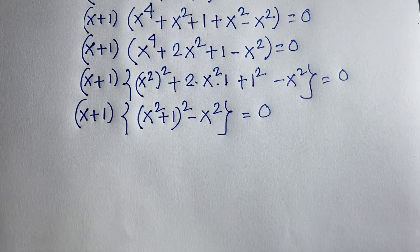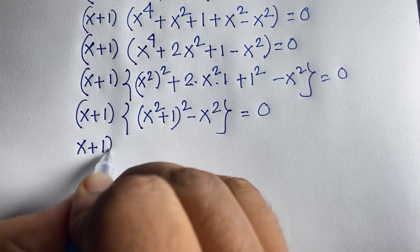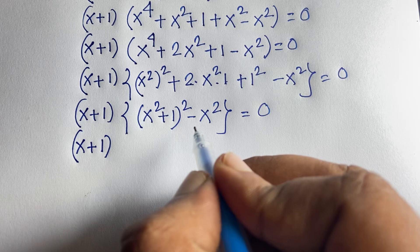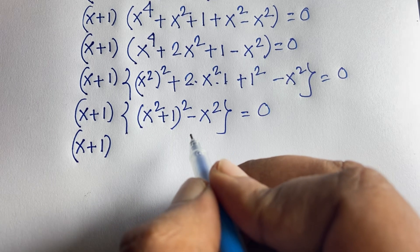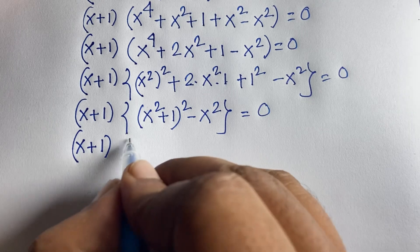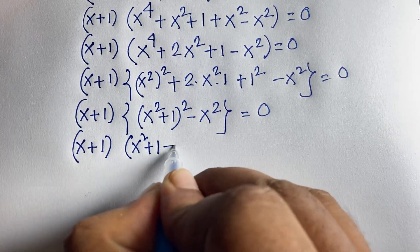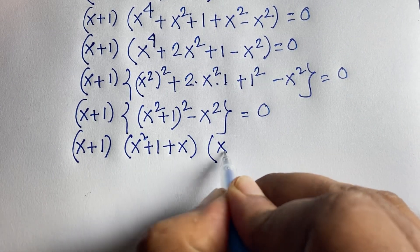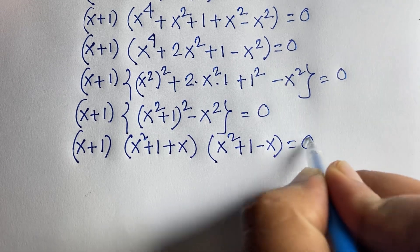Now, thinking of this as a difference of squares — a squared minus b squared equals a plus b times a minus b — where a is x squared plus 1 and b is x, I can say this becomes x plus 1 times x squared plus 1 plus x times x squared plus 1 minus x is equal to 0.